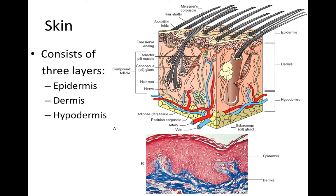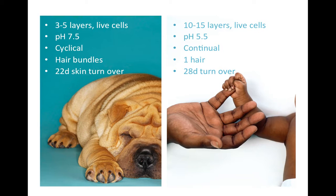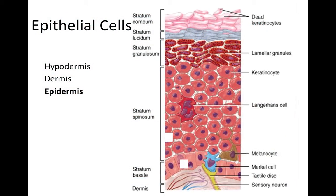A comparison between humans and dogs and cats: dogs in particular have three to five layers of live cells in their skin, a pH of seven and a half, cyclical growth and shedding of skin, hair bundles through follicles with numerous hairs per follicle, and a 22-day skin turnover. Humans have 10 to 15 layers of live cells, a pH of five and a half, continual hair growth, one hair per follicle, and a 28-day turnover.